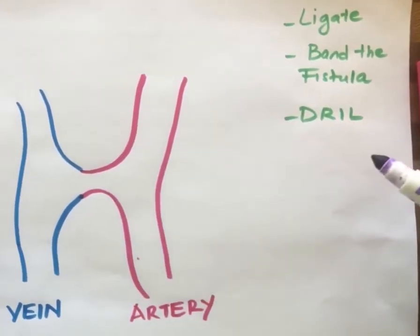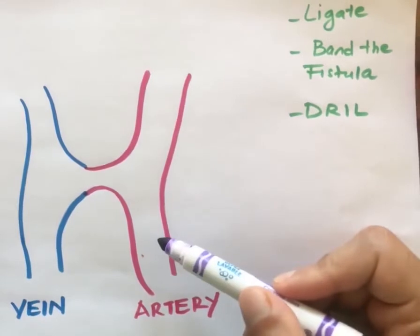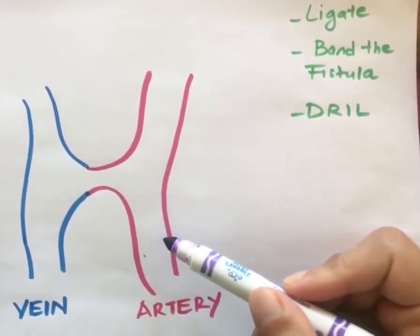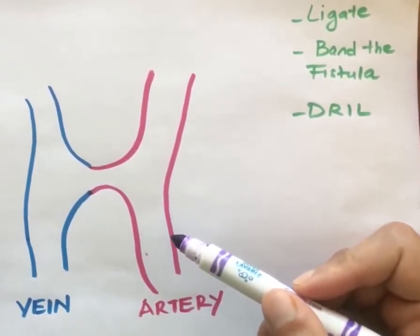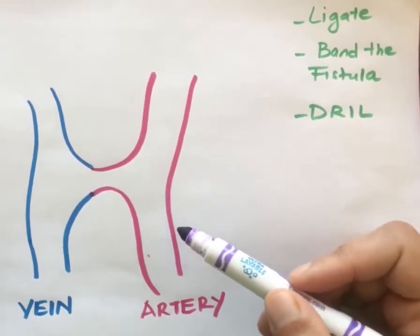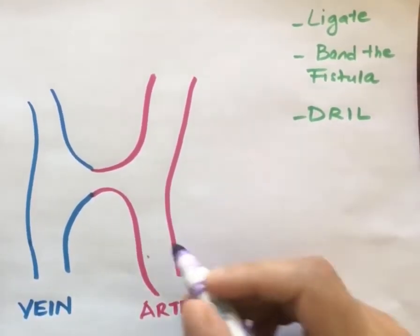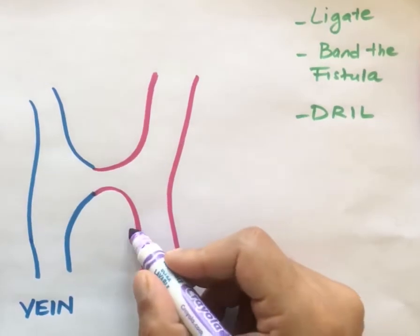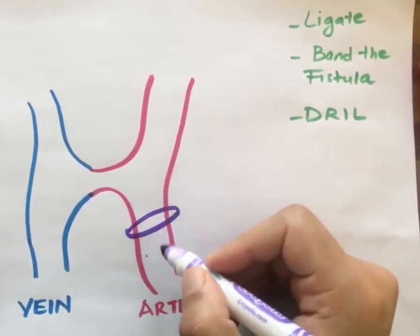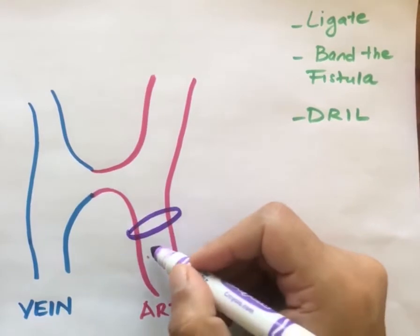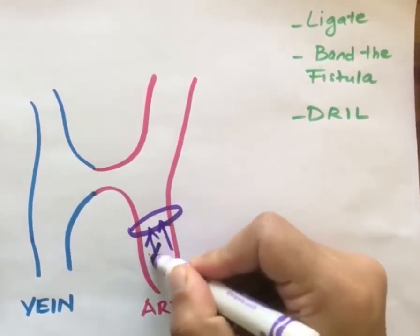This patient is having steal after you performed an AV fistula. For this patient, you're going to perform a DRIL procedure, which has a ligation component — you basically ligate the artery distal to your anastomosis, so there is no backflow of blood.